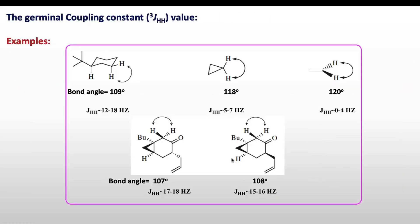Examples of geminal coupling: at a bond angle of 109 degrees between two protons on the same carbon, the coupling constant is 12 to 18 Hz. As the bond angle increases to 118 degrees, the coupling constant decreases to 5 to 7 Hz. Increasing further, it drops to 0 to 4 Hz. In another example at 107 degrees the coupling constant is 17 to 18 Hz, and a slight increase to 108 degrees decreases it slightly to 15 to 16 Hz — confirming that as bond angle increases, geminal coupling constant decreases.